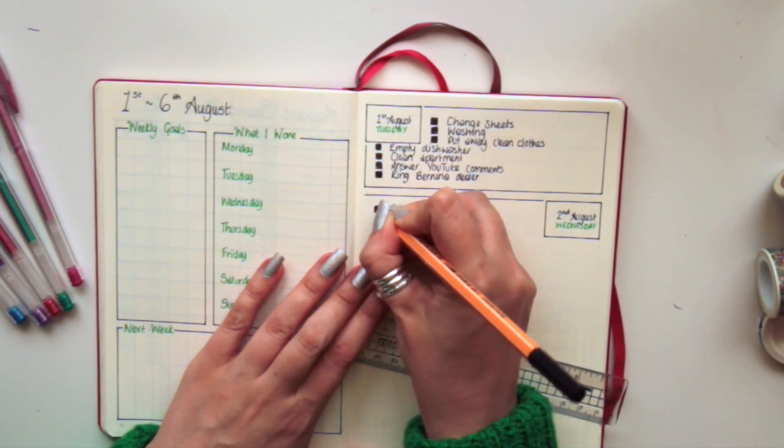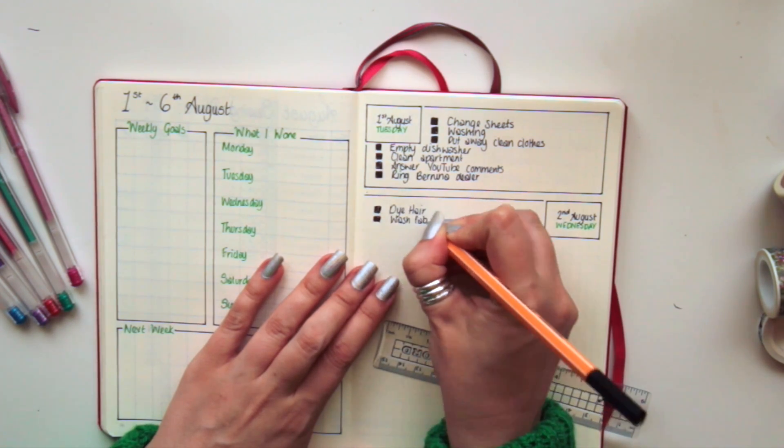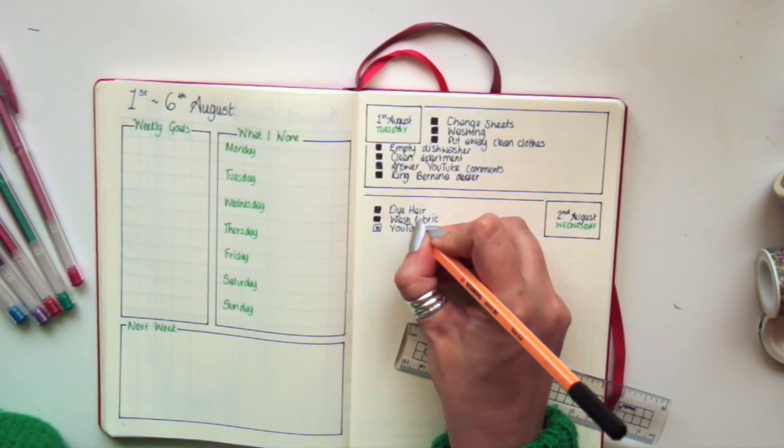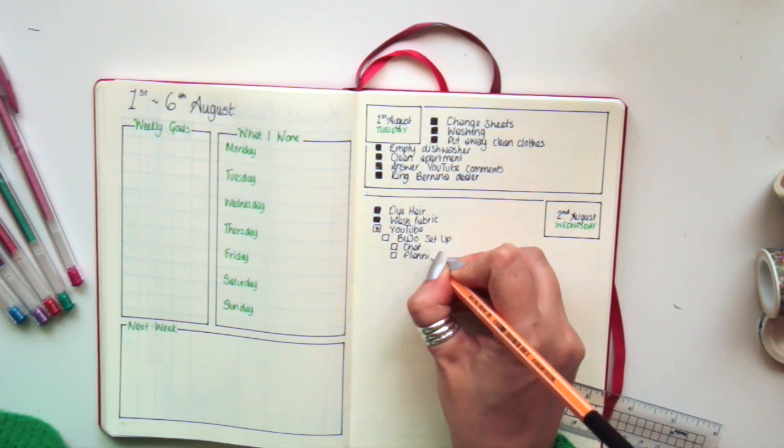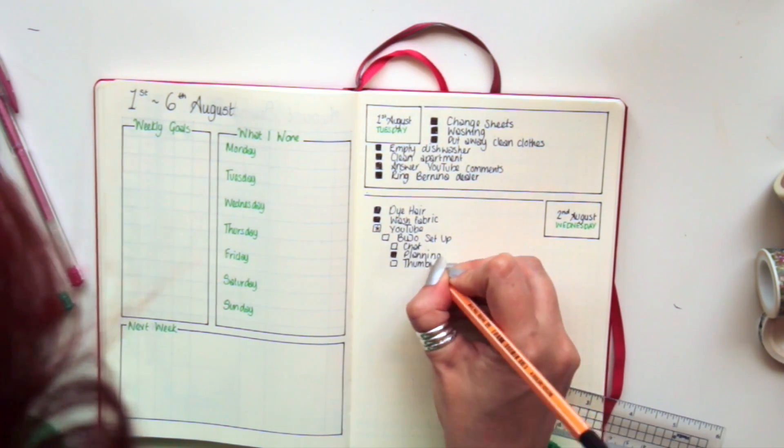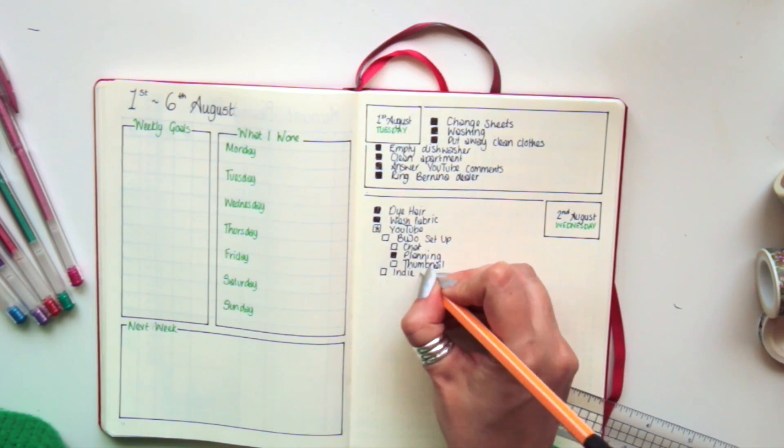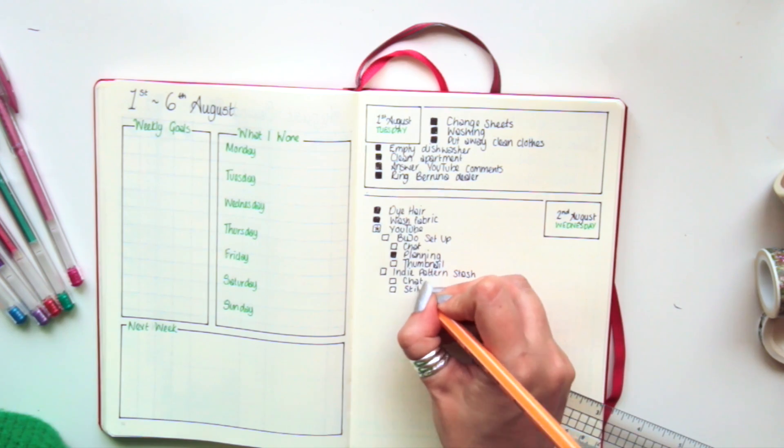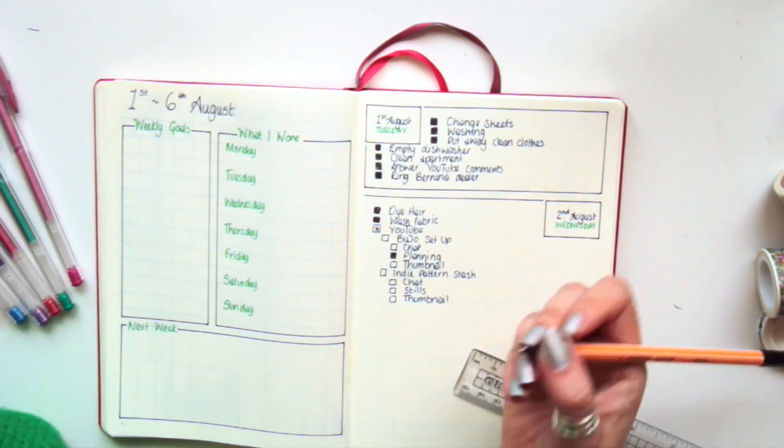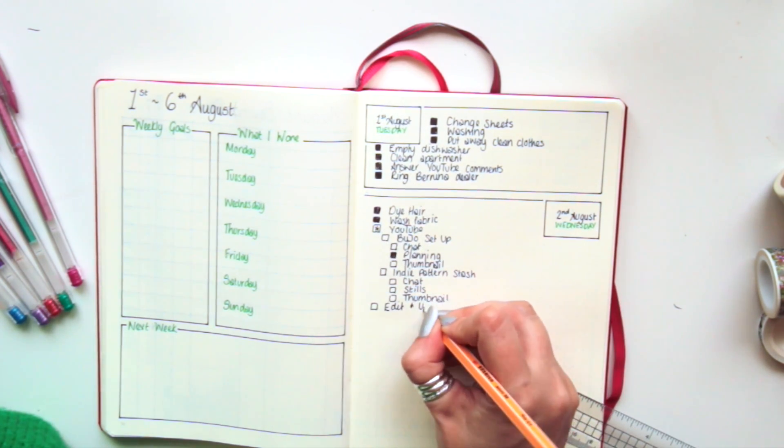So I'm planning out what I wanted to do today, including all the YouTube videos that I wanted to film. Didn't quite get all of that done. In fact, I've only got the bullet journal setup done. I didn't get the Indian pattern stash done, so I'm gonna have to do that later this week at some point. But it's still summer so there's still lots of light when I get home from work, so that shouldn't be too bad.